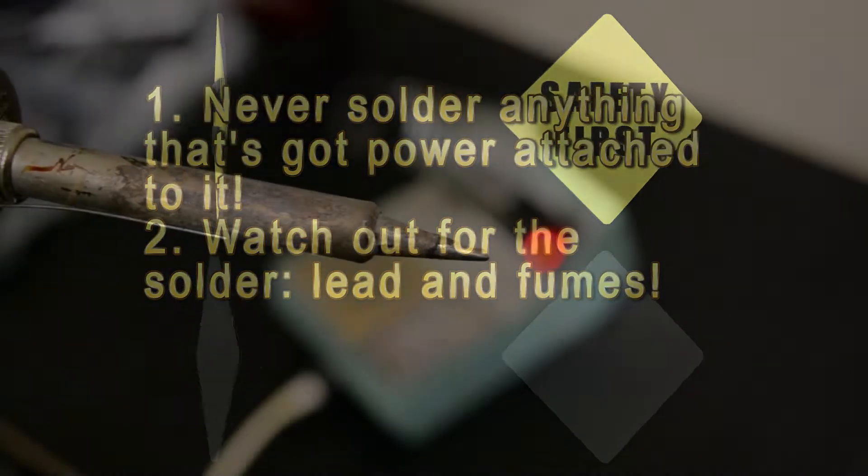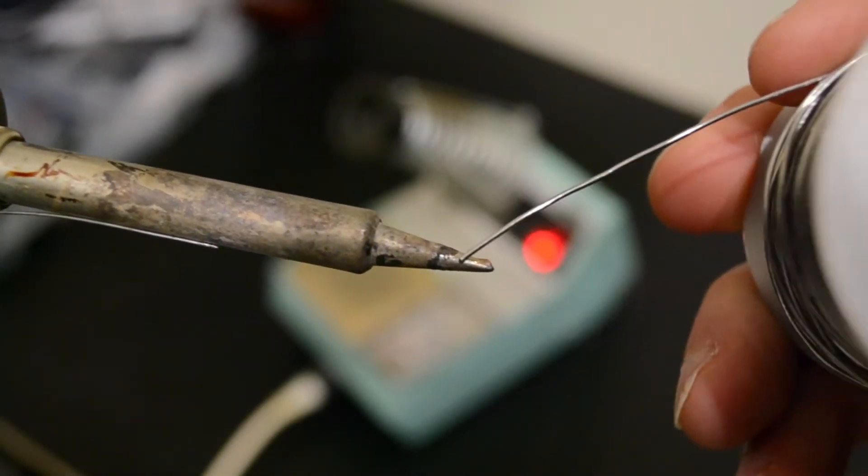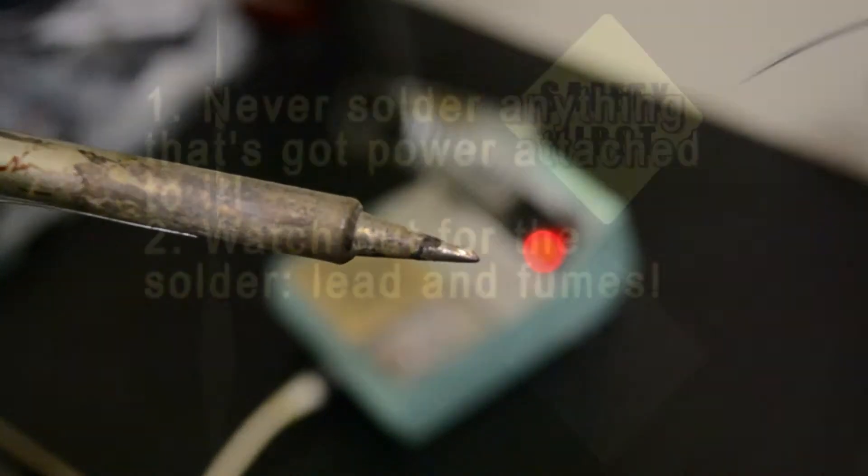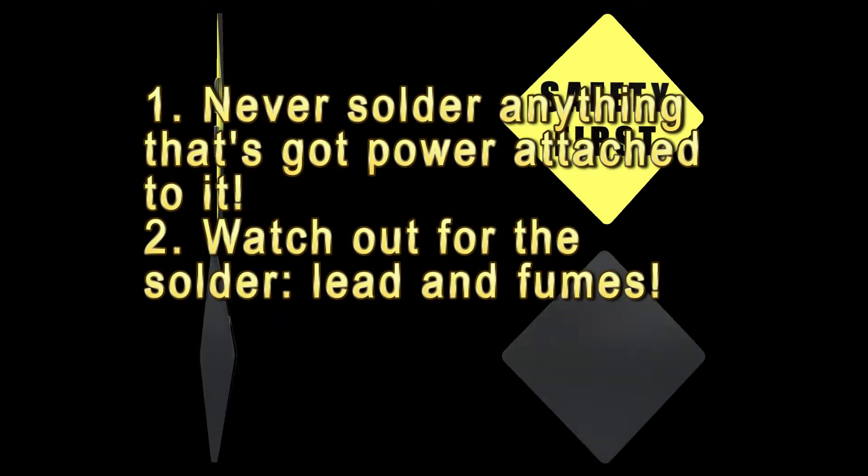When you see that smoke coming off, that's probably the rosin core inside, but there could be lead in it too. So make sure you use a well-ventilated area, or at least keep a fan nearby, to blow that smoke away so you're not breathing it in.